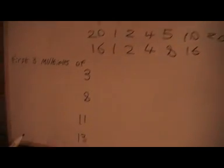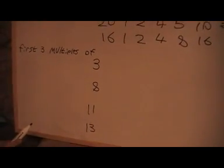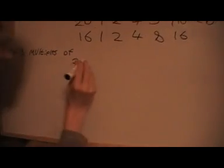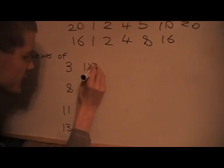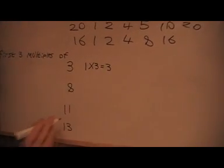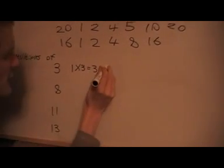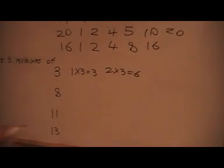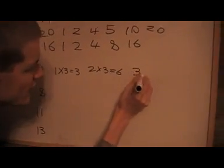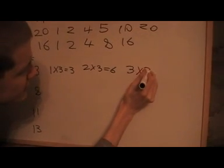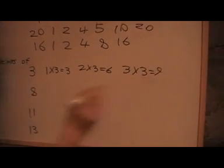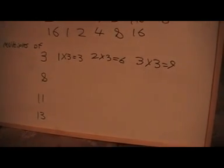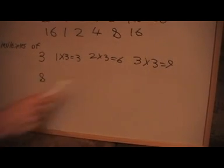Now I want to write down the first 3 multiples of these numbers. The first multiple of 3 is going to be 1 times 3, so that's 3. The second multiple is 2 times 3, that's 6. The third multiple is 3 times 3, that's 9. So the first 3 multiples of 3 are 3, 6, and 9.